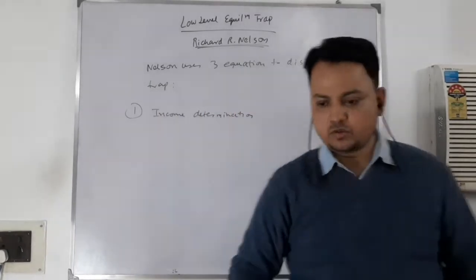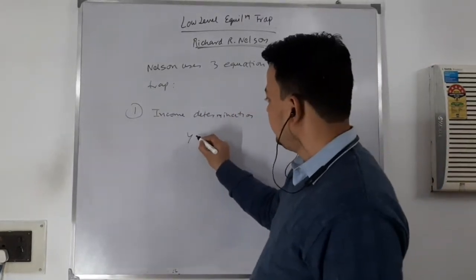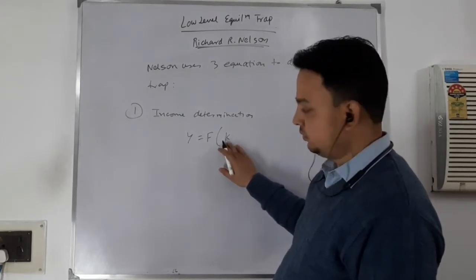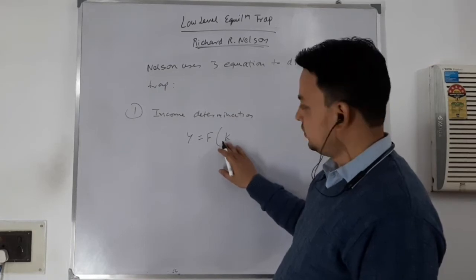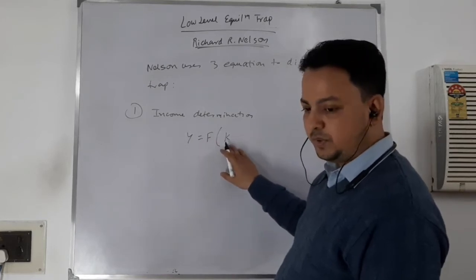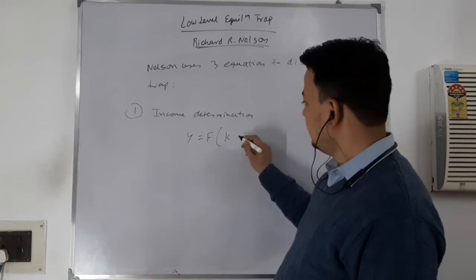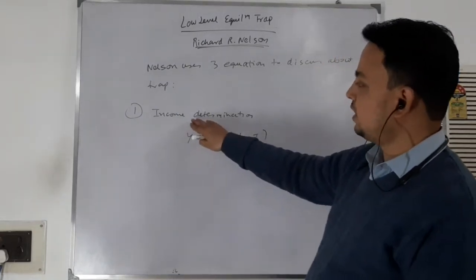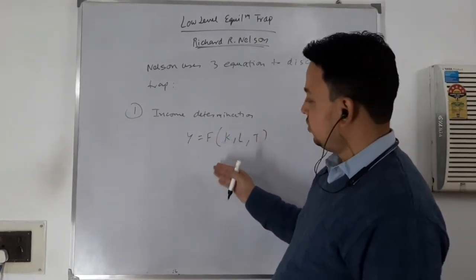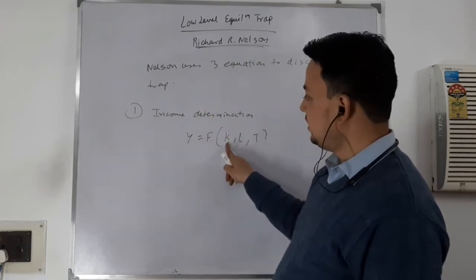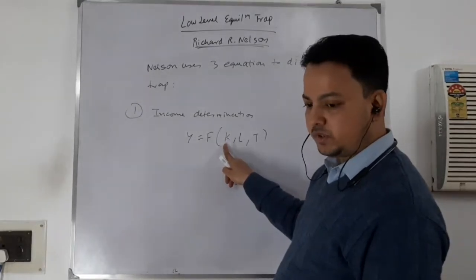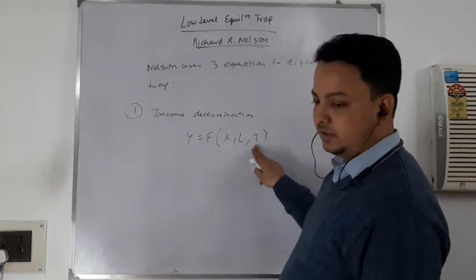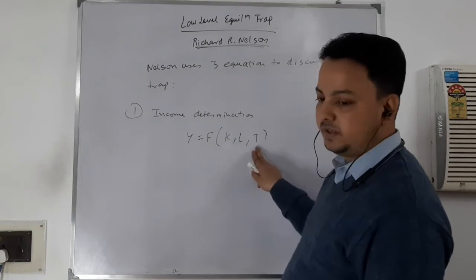Income is determined by three factors. One is capital stock — which includes cultivated land used for the production process. Higher the capital stock, higher will be income; it is positively related to capital stock. Second is population — higher the population, lower will be the income; it is negatively related to population. Third is technique — given improvement in technology, output will be higher; it is positively related to technique.